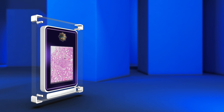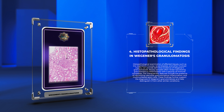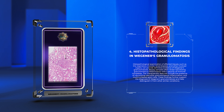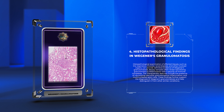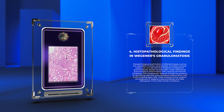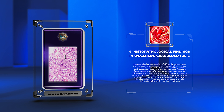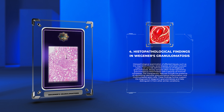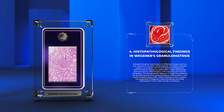Histopathological examination of affected tissues, such as the respiratory mucosa, renal biopsies, and other involved organs, can provide definitive evidence of Wegner's granulomatosis. Biopsy samples often reveal necrotizing granulomatous inflammation with a paucity of immune complexes. The characteristic features include the presence of necrotizing vasculitis, granulomatous inflammation, and multinucleated giant cells, helping distinguish it from other similar conditions.